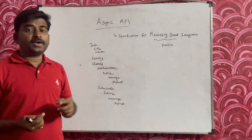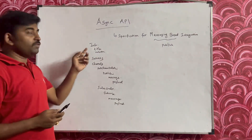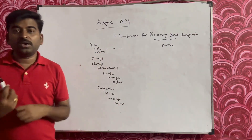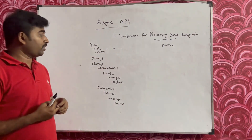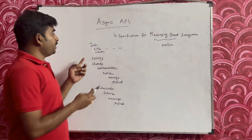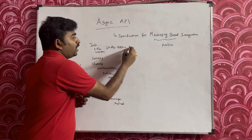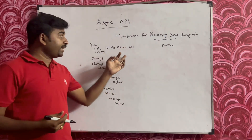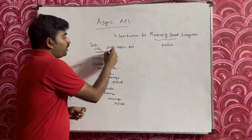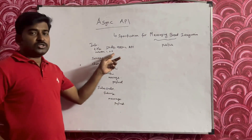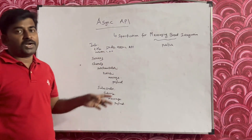When you look at the AsyncAPI spec, you need to tell what it is all about. There is an info section where you have a title, and you can mention the description about this particular AsyncAPI spec. For example, if I have an AsyncAPI for orders, I can mention this is the order AsyncAPI — meaning this specification will have all the details about order processing. You can also mention the version, such as 1.0.0, and if there is a change you can update it to 1.0.1.